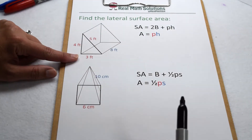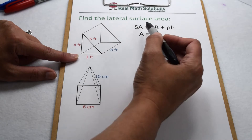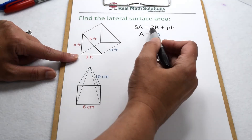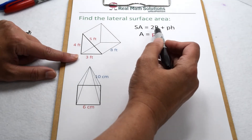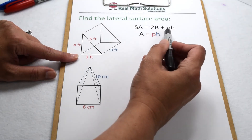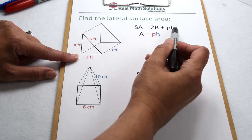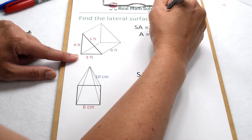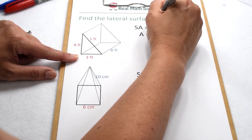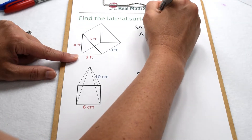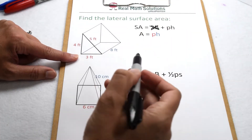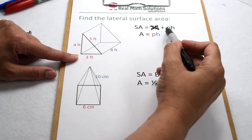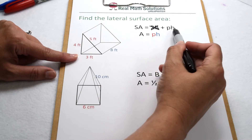For a prism, we can start with our surface area formula: two times the area of the base plus the perimeter of the base times the height. Since we don't want the area of the bases, we can simply take that part out of our equation and use the perimeter times the height part.